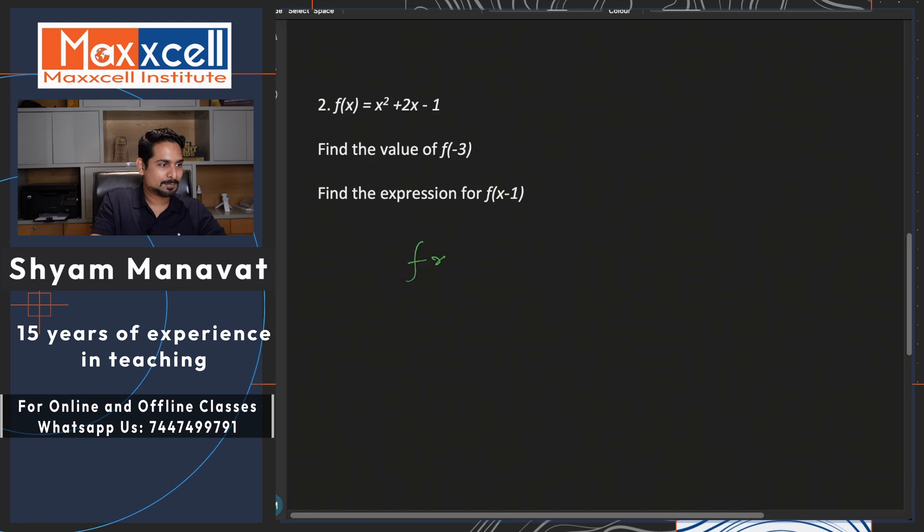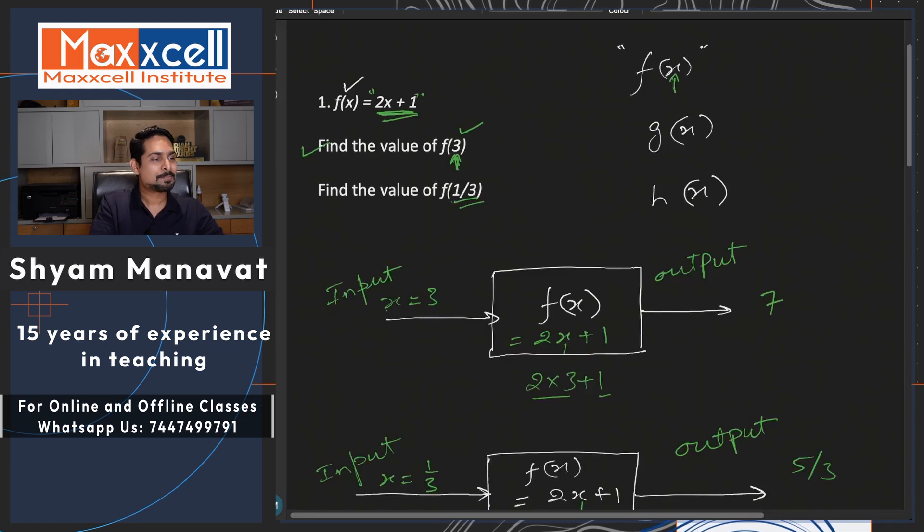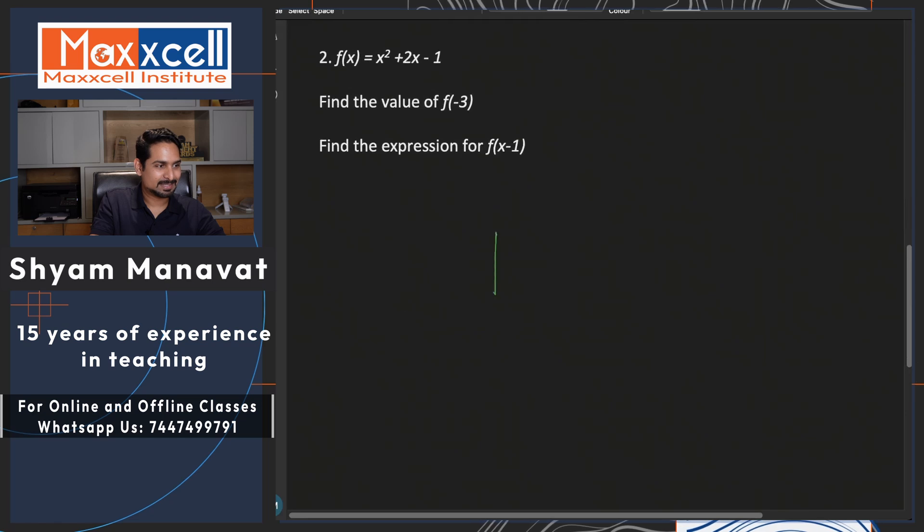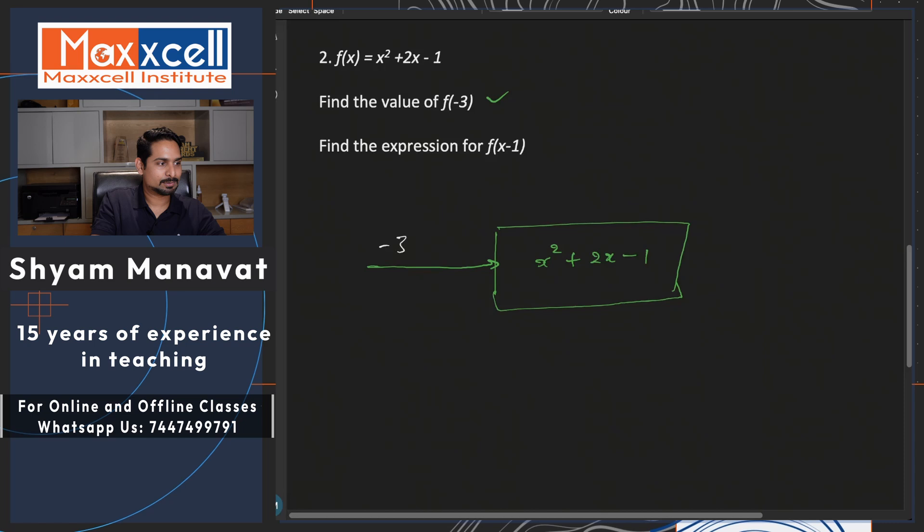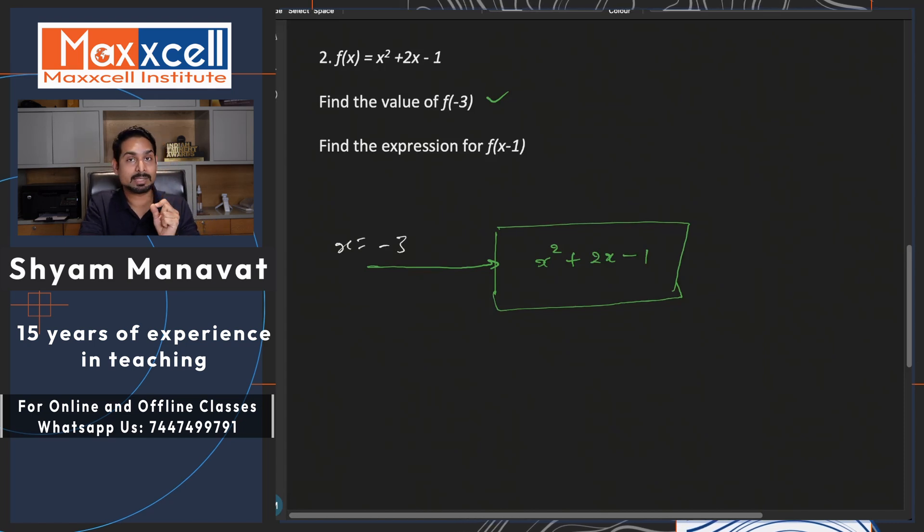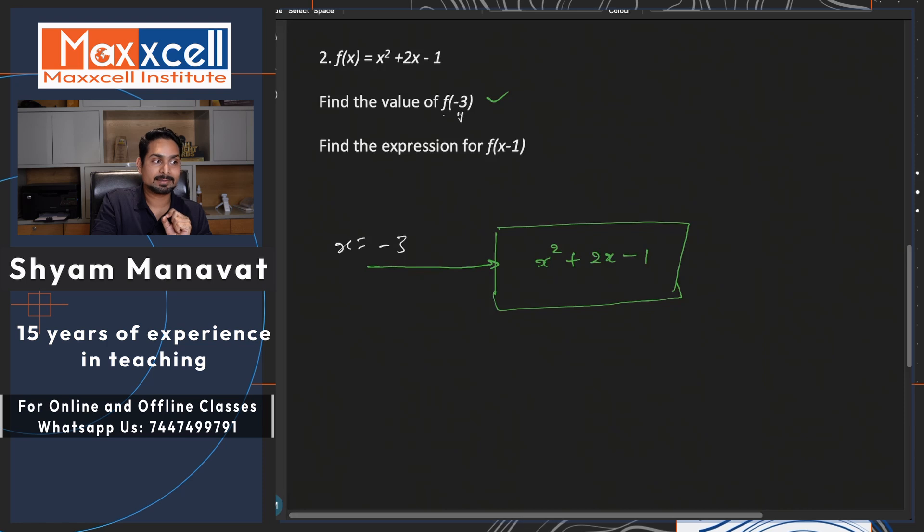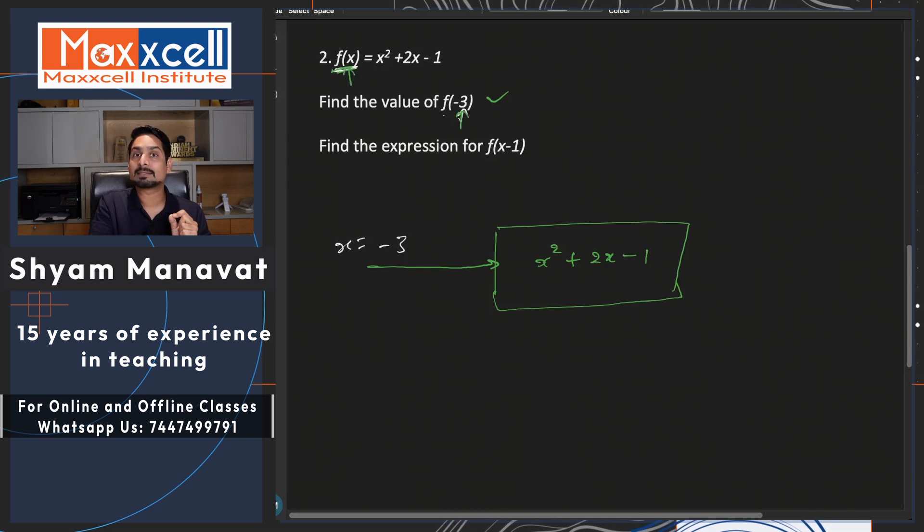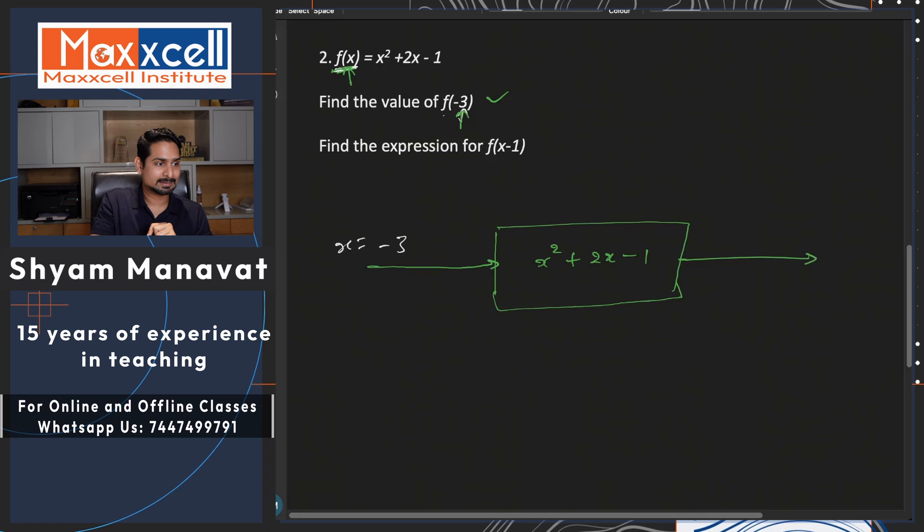Let us try a few more such expressions and understand the input output. I won't write the question again, all my students are intelligent enough to understand that the function here is x square plus 2x minus 1. And as per the question, I want the input to be minus 3. Did you understand why I am substituting x is equal to minus 3? Because question said find f of minus 3.